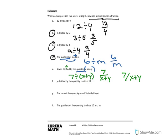Moving on to y divided by the quantity x minus 11. Again, we have our division sign and the quantity is in parentheses. Because you have the y first, we write y first, divided by, and then our grouping symbols — parentheses — around x minus 11. The second way of writing it is as a fraction: y goes on top and x minus 11 goes on the bottom.